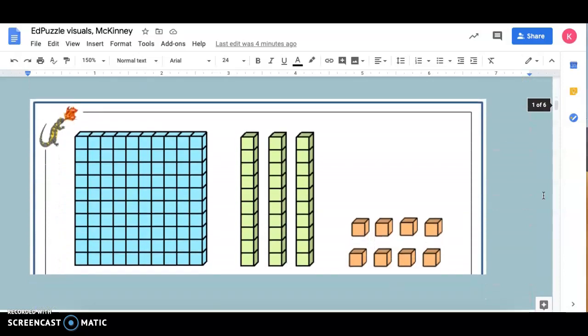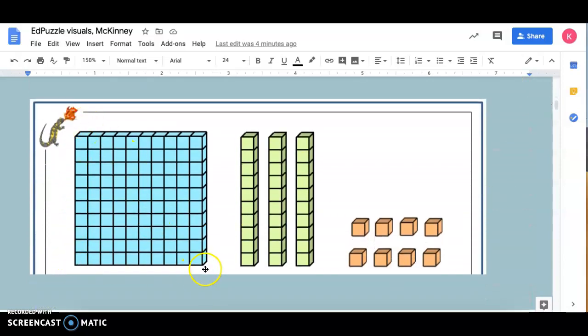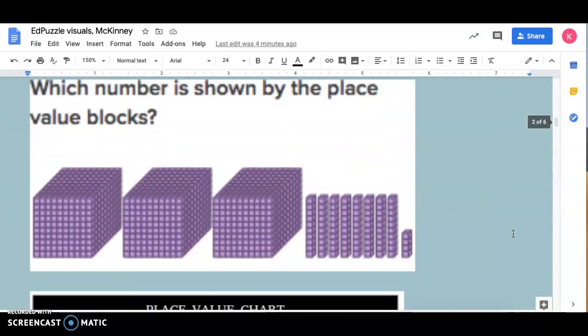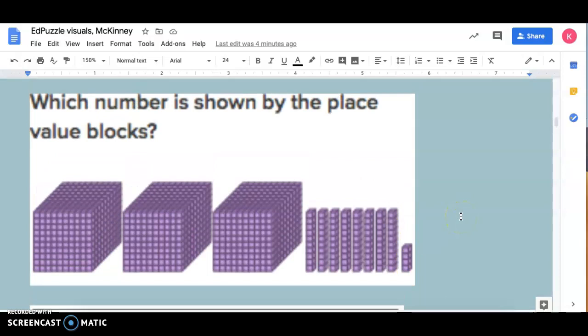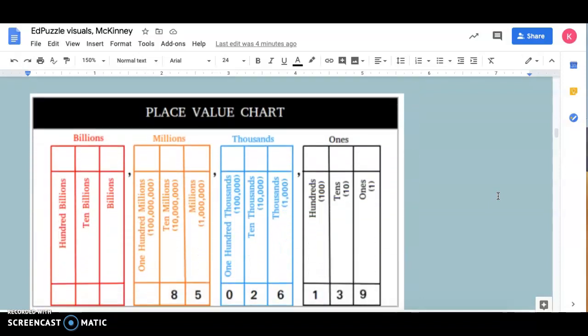So now this is hundreds, tens and ones. What number does this represent? These are thousands, tens, and then we have ones. What number does this represent? Alright, awesome job.